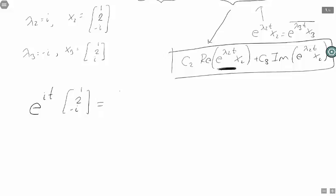e to the i theta is cosine theta plus i sine theta. So e to the it is cosine t plus i times sine t. And this is a scalar, it's not a vector, it's just some function, and it's multiplied by the vector [1, 2, -i].